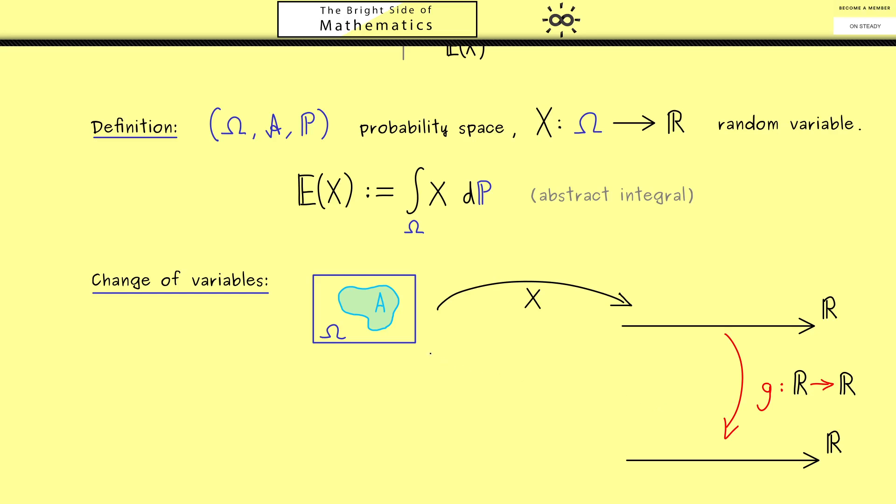You should see we can formulate a new random variable g after X. Indeed, often you see this written as g(X). In our example from before, this would be X to the power 2. The important thing to note is this is a new random variable where also the expectation can be interesting. It turns out this new expectation is related to the old one, and exactly there the change of variables formula comes in.